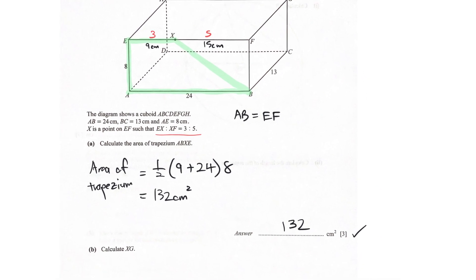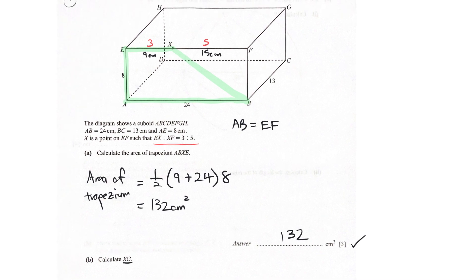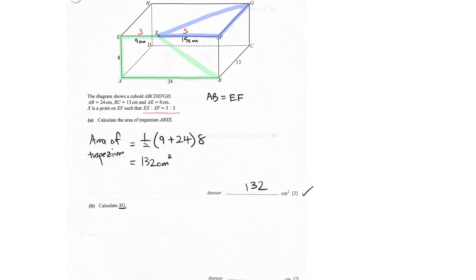Next we have calculate the length of XG. So now we are looking at a different plane of this 3D diagram. XG is actually an imaginary line here that lies on this plane when looked at from the top. Now, don't be deceived.